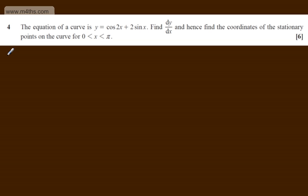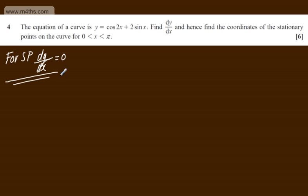For stationary points, dy/dx, the gradient function, will be equal to 0. So what I'm going to do is differentiate both sides of this equation with respect to x, set it to 0, solve for x, and then consider values where x is between 0 and π. So let's differentiate both sides of this equation with respect to x.